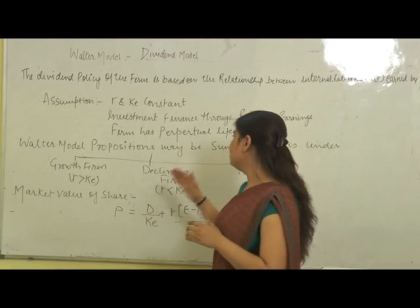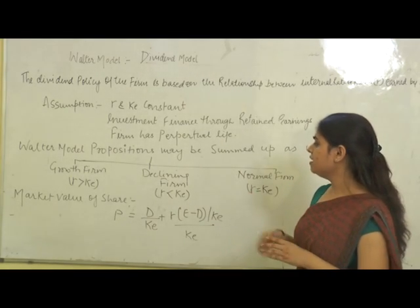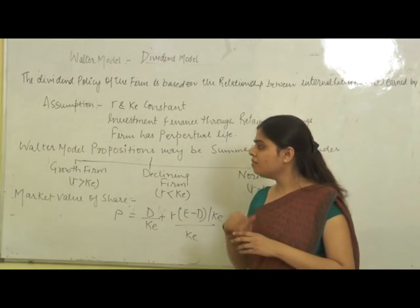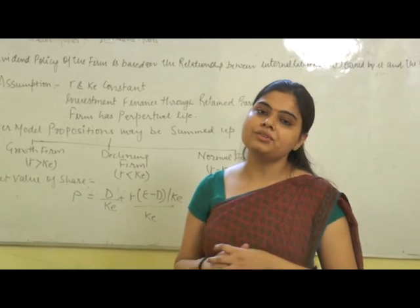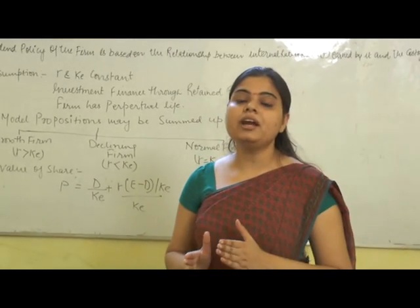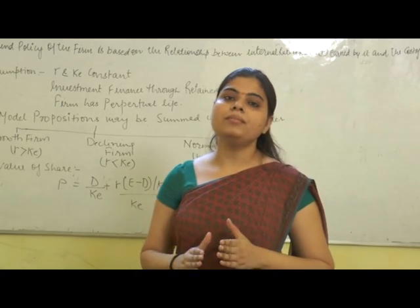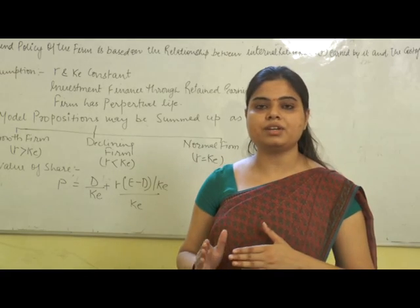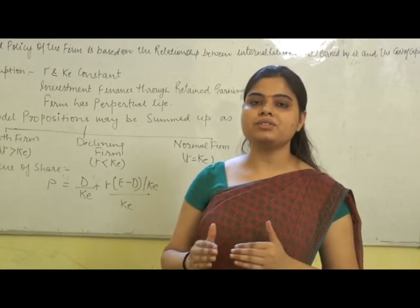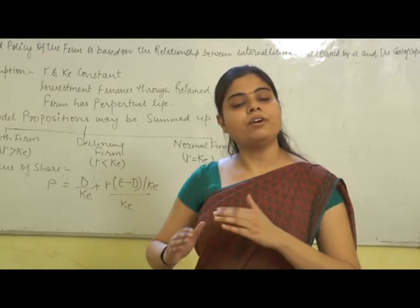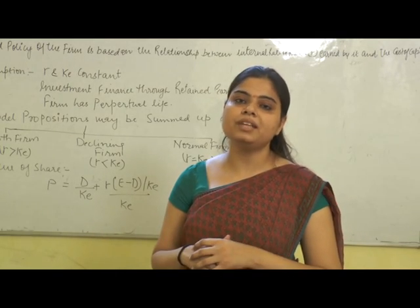The Walter model propositions are summarized under three situations. The first is the Growth firm, the second is the Declining firm, and the third is the Normal firm. In the Growth firm, the rate of return R is greater than the cost of capital KE, showing that the firm has adequate investment opportunity. In that situation, the firm retains 100% profits in the organization and does not distribute dividend, because they have investment opportunity. By using that opportunity, they can earn maximum profit and then distribute to the investors.